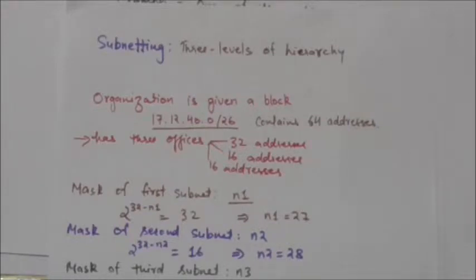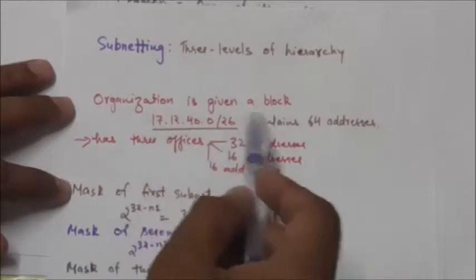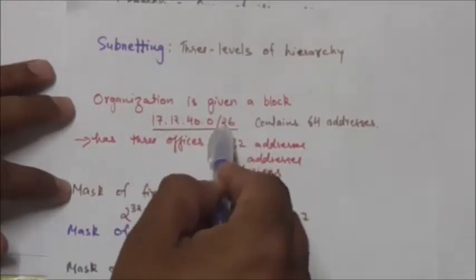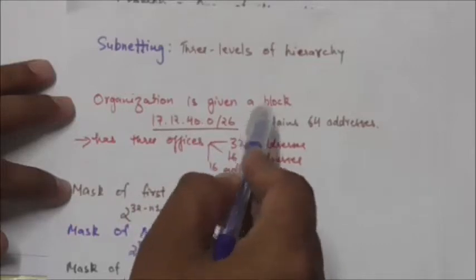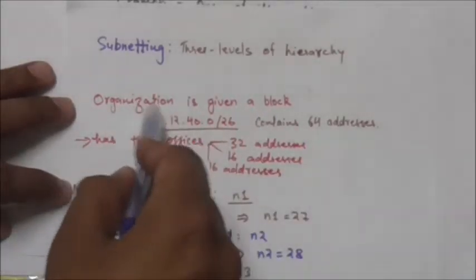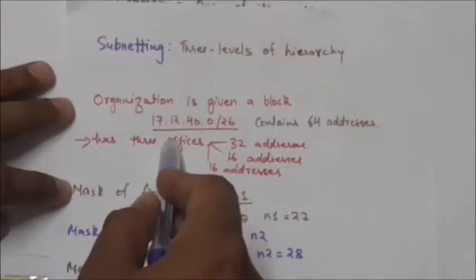The rest of the world sees this organization as one entity, but internally there are several subnets. The organization needs to create small sub-blocks of addresses, each assigned to a specific subnet. Just as the organization has its own mask, each subnet also has its own mask. For example, suppose an organization is given a block with mask /26. This block will contain only 64 addresses. Suppose this organization has three offices.